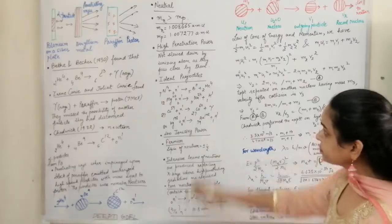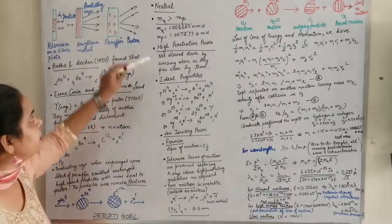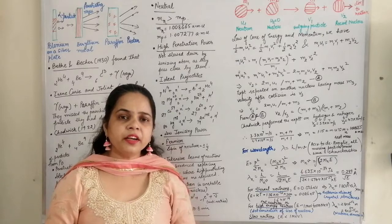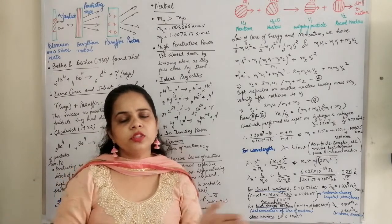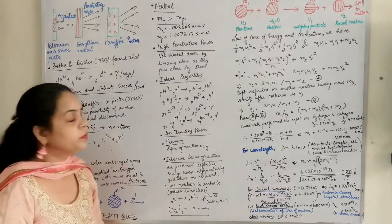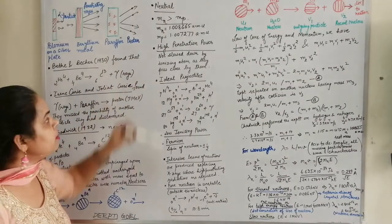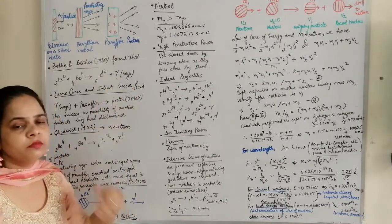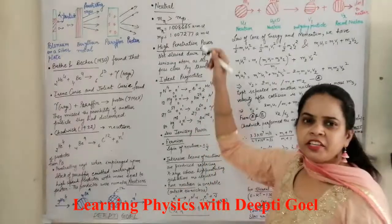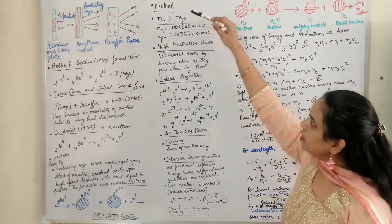The third property is that the neutron has high penetration power. Since it is a neutral, uncharged particle, it would not be attracted or deflected by any of the molecules in its path. When it is going to hit a particular target, it travels straight without being deflected. It would not be slowed down by any of the ionizing atoms along its path, so it penetrates deep inside the target nucleus — the penetration depth is very high in the case of neutrons.